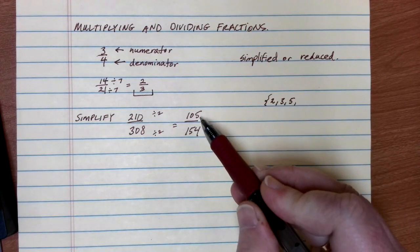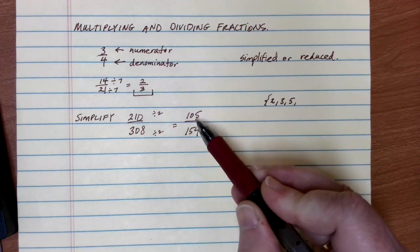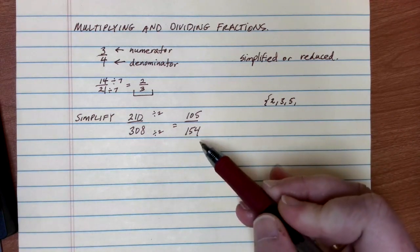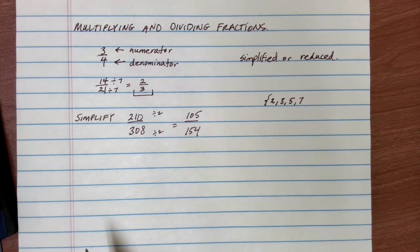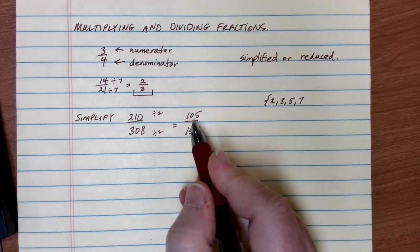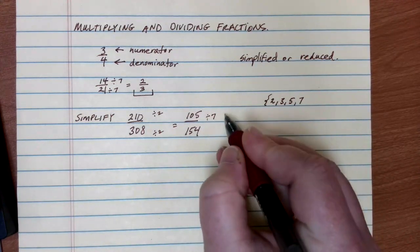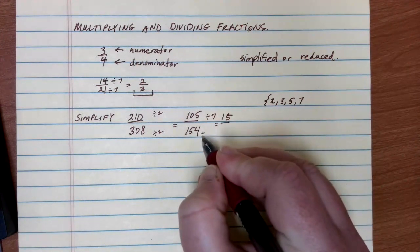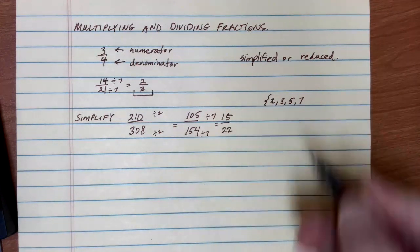Then I can check five. Five will go into the top because it ends in a five. Remember, it's divisible by five if it ends in a five or a zero. But five does not go into 154 evenly. The next prime number to try is seven. If I divide 105 by seven, that actually does go in evenly. It goes in 15 times. And if I divide the bottom by seven, it also happens to go in evenly and goes in 22 times.